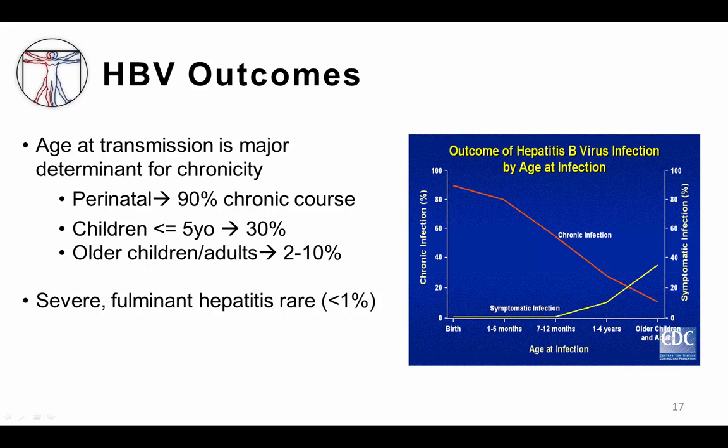Adults with underlying comorbidities such as immunosuppressive conditions or other liver diseases may be more susceptible. Like the other hepatitis viruses, severe life-threatening hepatitis can occur with hepatitis B infection, however it is rather rare.